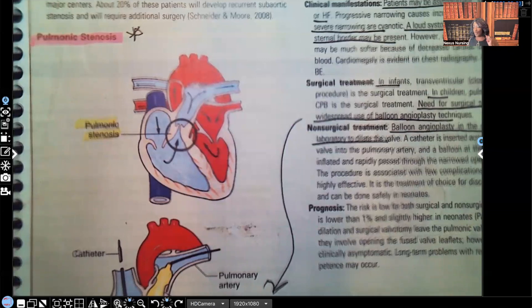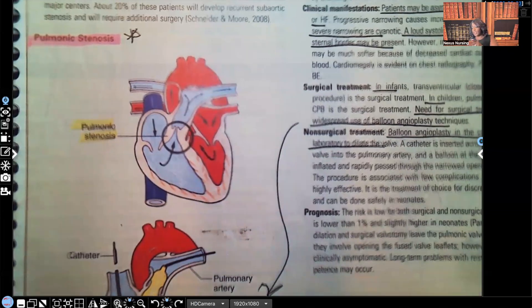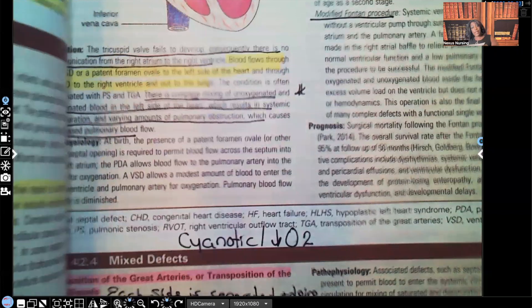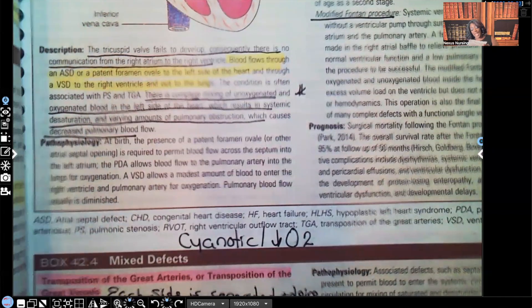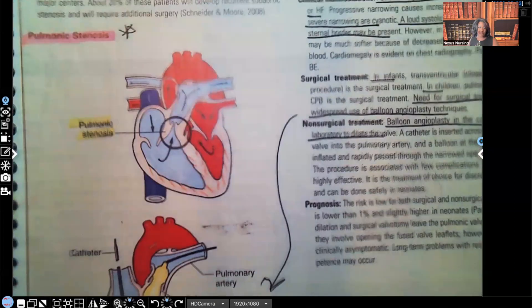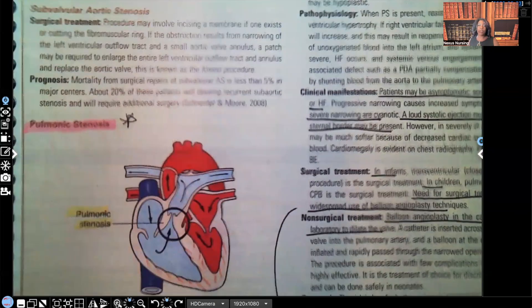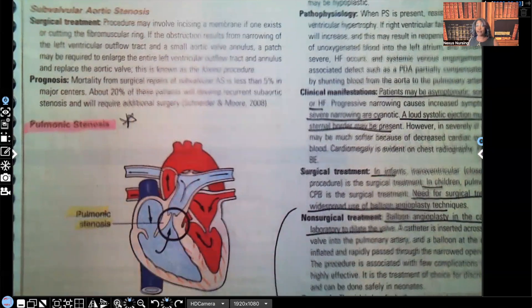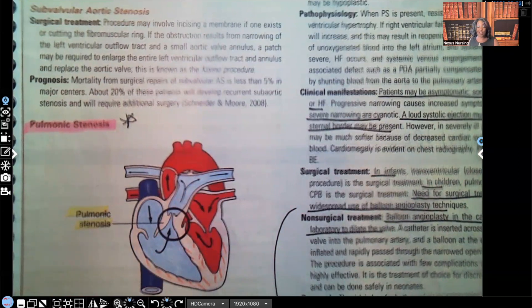I promise I'll keep going. I'm going to be covering the other cyanotic disorders such as tetralogy of Fallot, tricuspid atresia, transposition of great vessels—all of those are coming. Watch out for my announcement on my next NCLEX preparation live on YouTube. Thank you so much for watching this video.